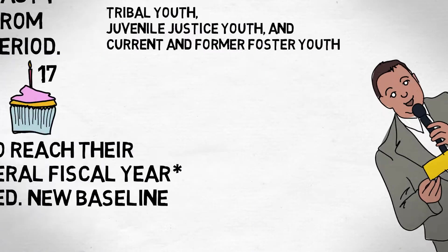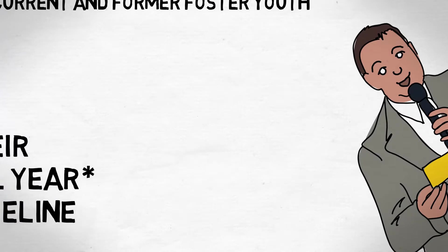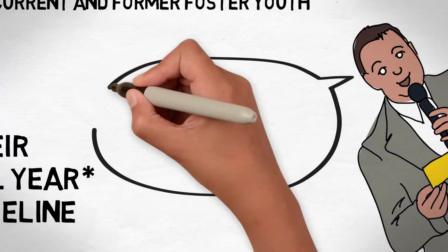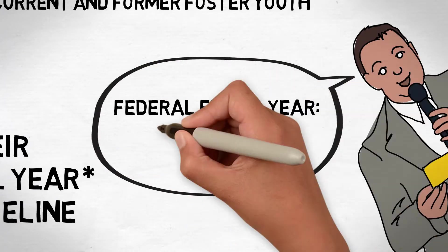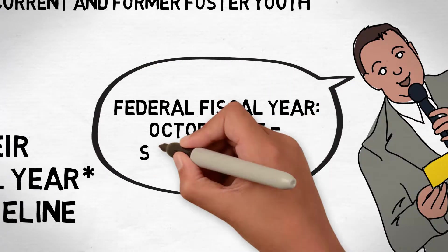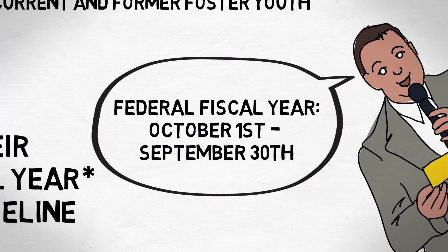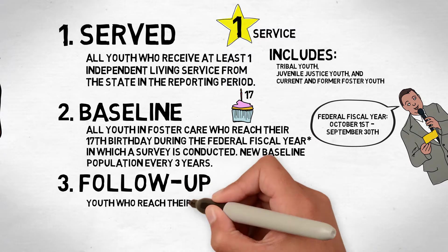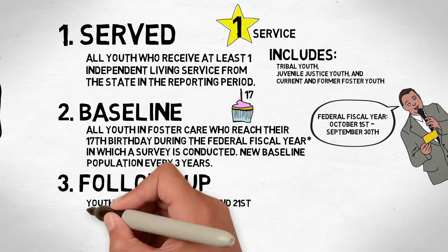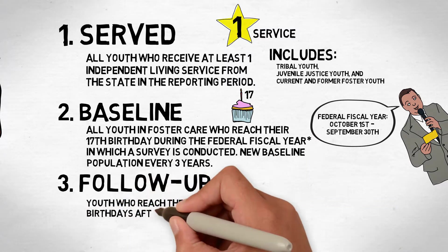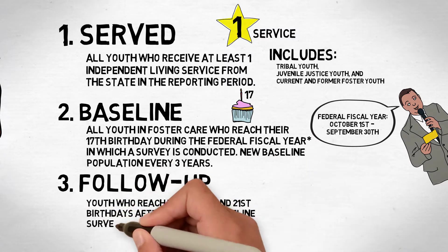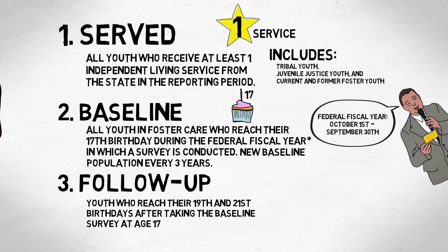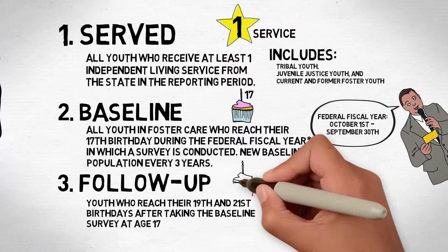What's the federal fiscal year, you ask? The federal fiscal year runs from October 1st through September 30th. Lastly, the follow-up population refers to the youth who reach their 19th and 21st birthdays after taking the baseline survey at age 17.